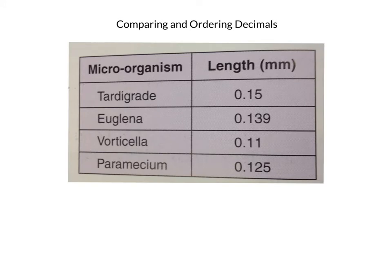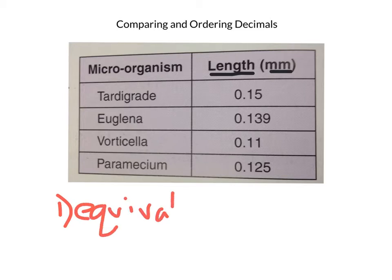Let's take a look at this chart. This chart shows microorganisms — organisms too small to be seen just with your eye. You need a special microscope to see these; they're so small. Here we have the length, and they're very small because they're measured in millimeters. When we look at these different microorganisms and want to compare them, one thing we should do is always create equivalent decimals.